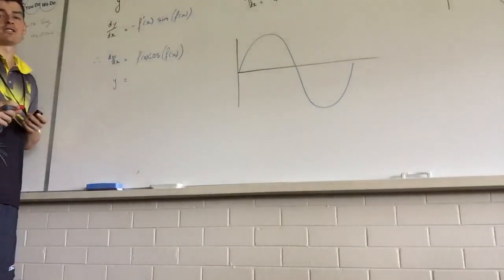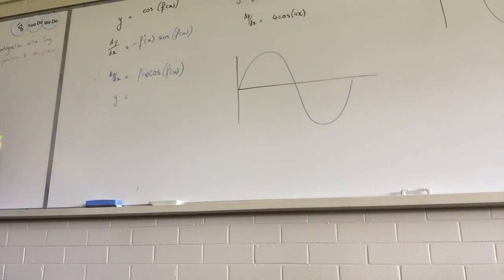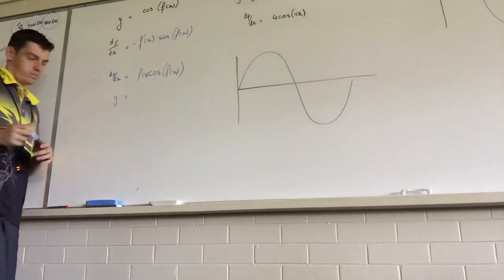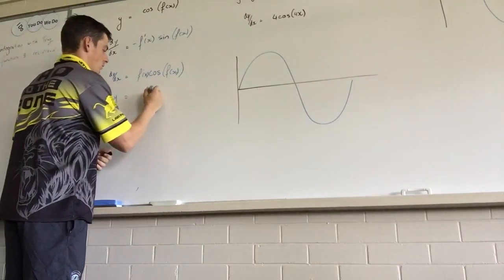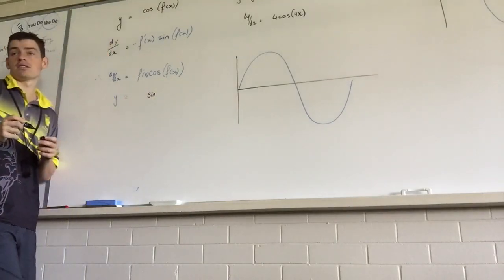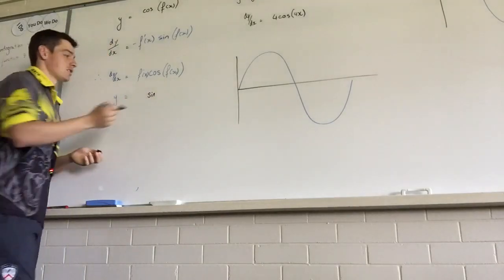So what will happen to the cos? Let's start with that. Will the cos stay cos? It'll become sine. What happens to the thing inside the bracket? It stays the same, or does it change? It stays the same.